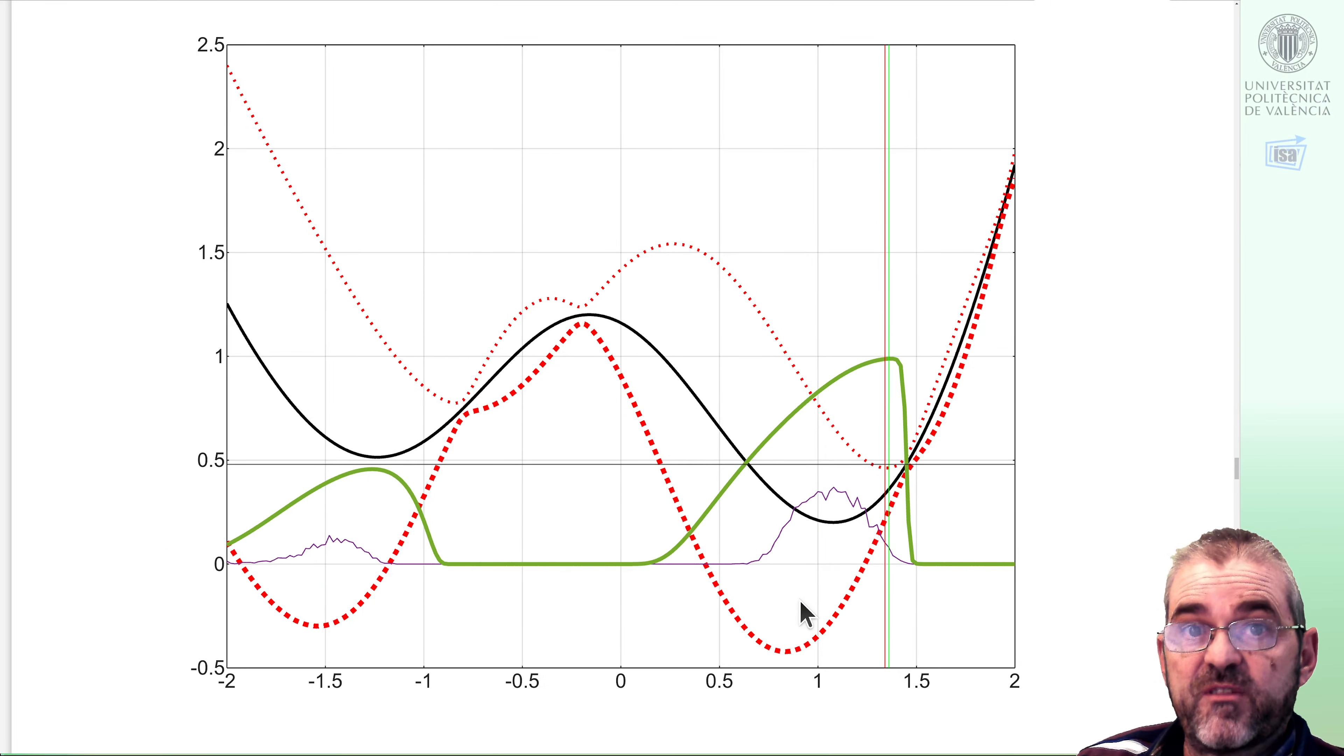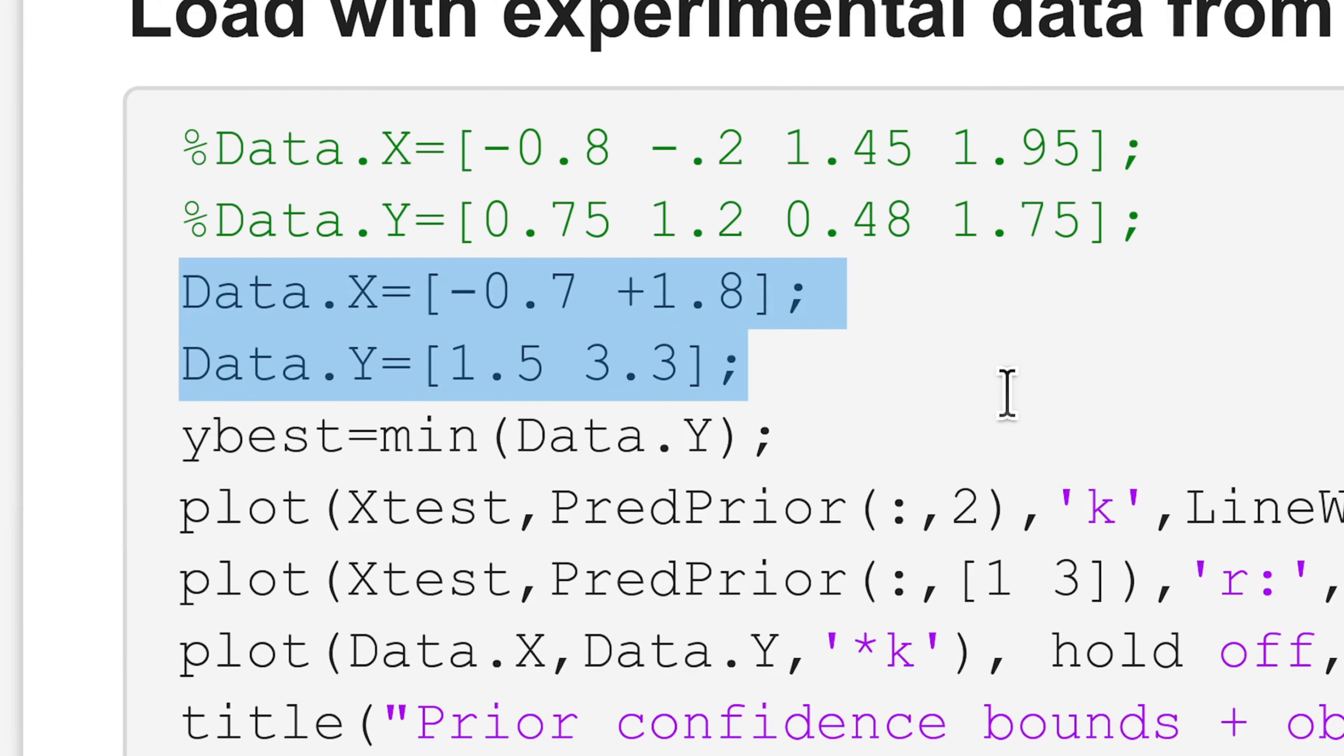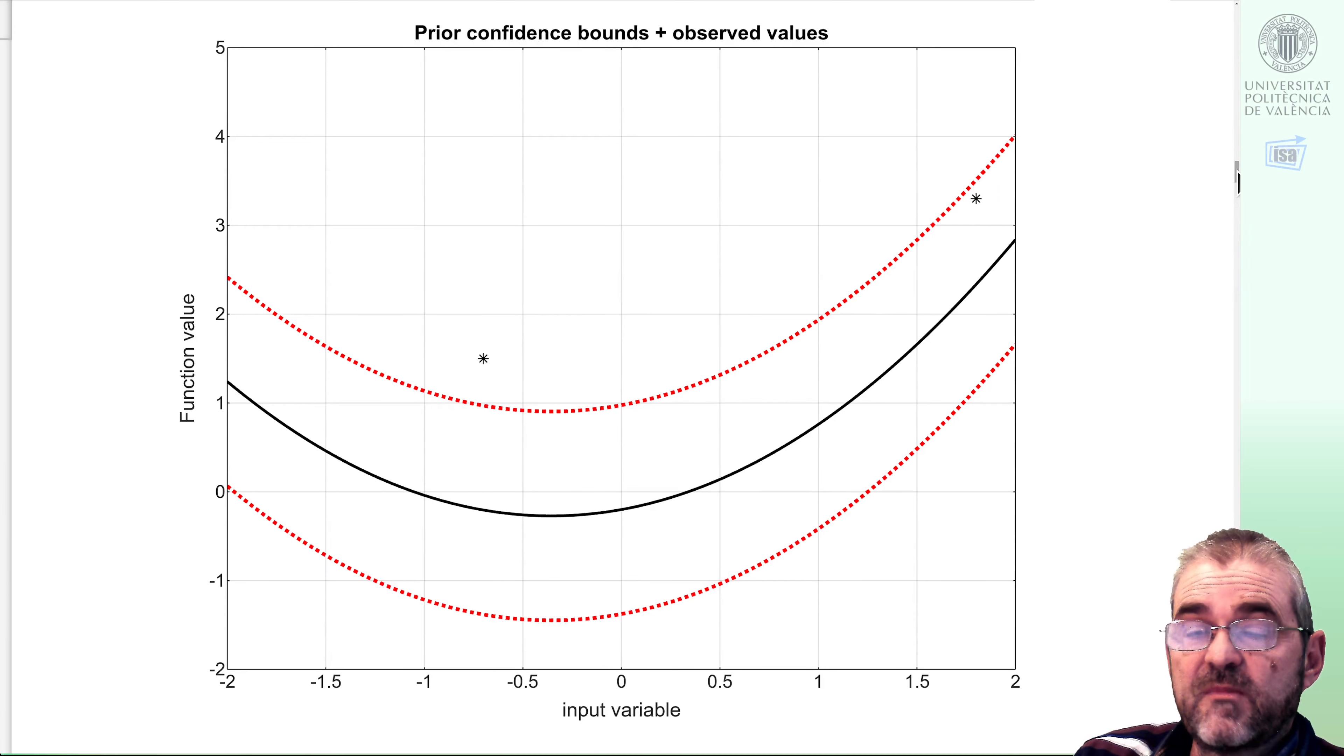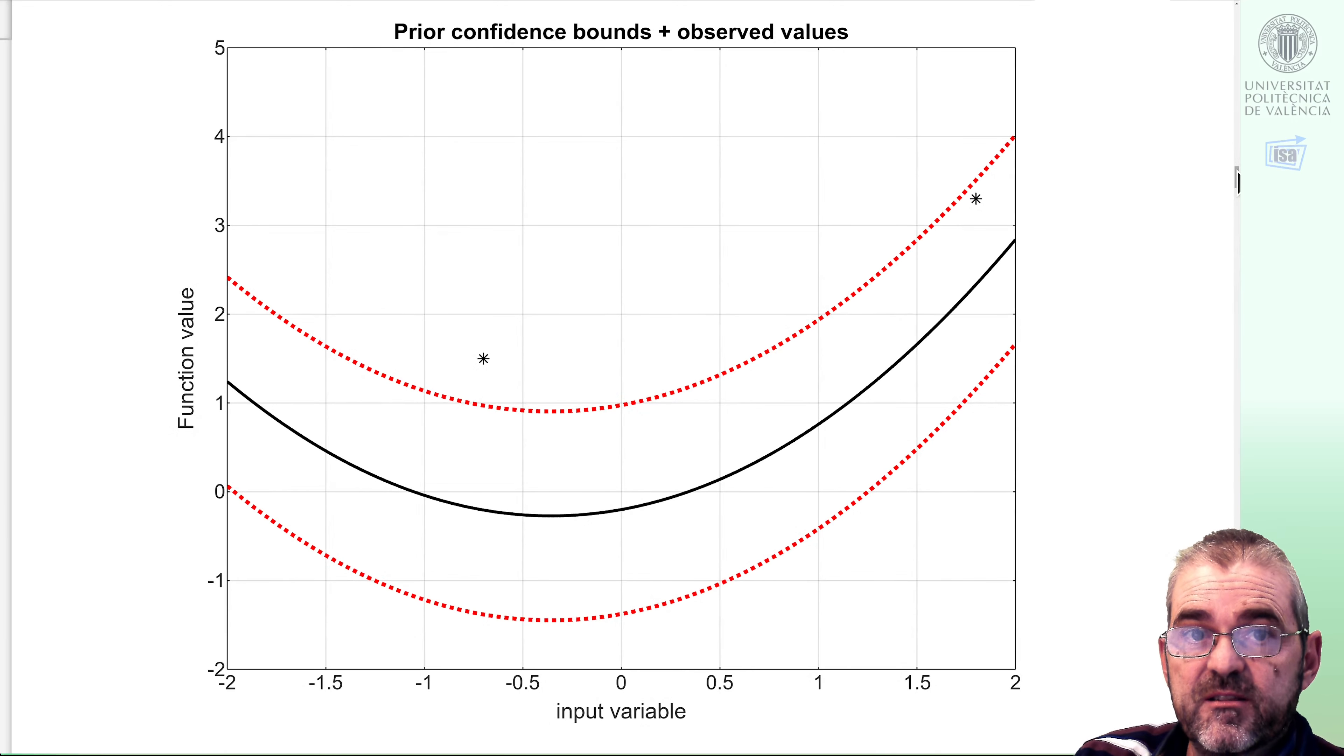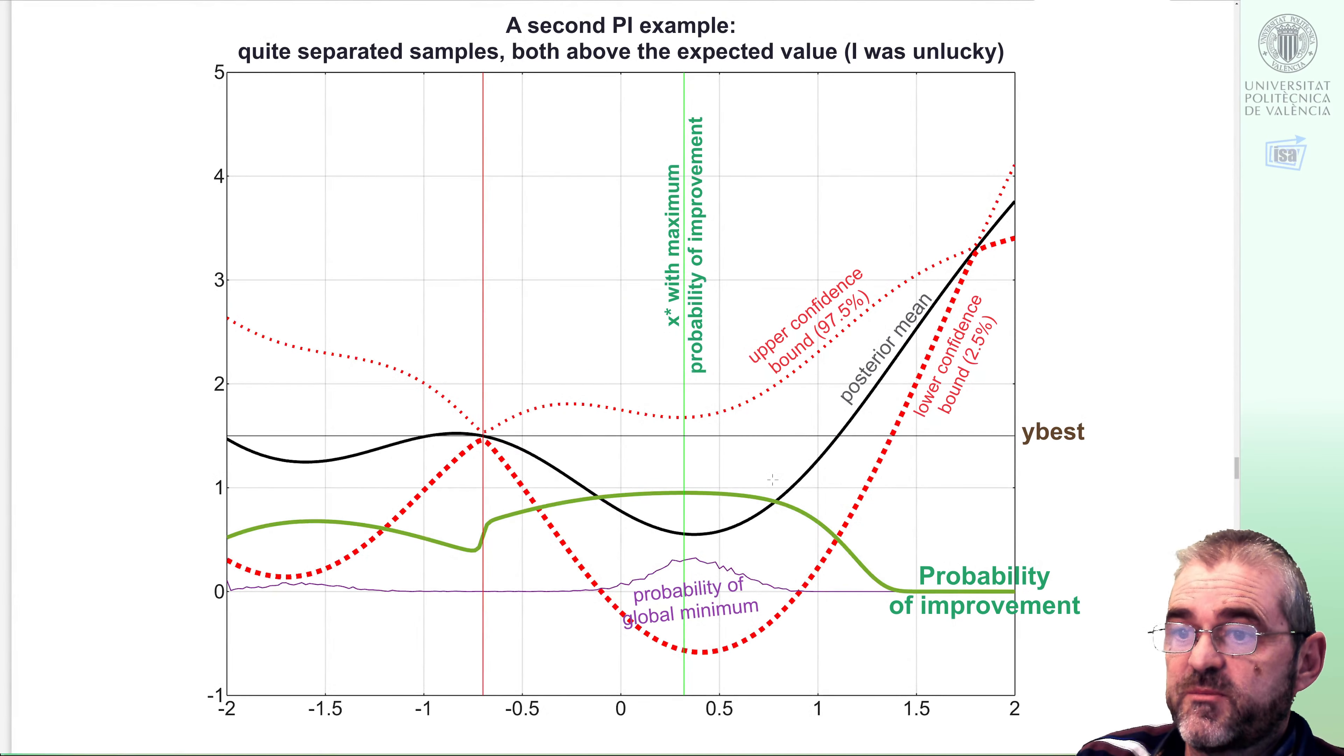This is somehow the meaning of the probability of improvement in this setup. Let us consider another dataset. If I use this data, they are no longer close, so the gradient interpretation is no longer valid. In here, we just have two points, and we have been unlucky, in the sense that they are well above the mean, well above the expected value. So probability of improvement, in that case, tells me to go away from my previous samples, and these are the points in which I have a high probability of improving over my best sample, which is this one. These are the points in which the upper confidence bound is closest to the best sample. So if I am unlucky, probability of improvement tells me to just go away and try somewhere else.